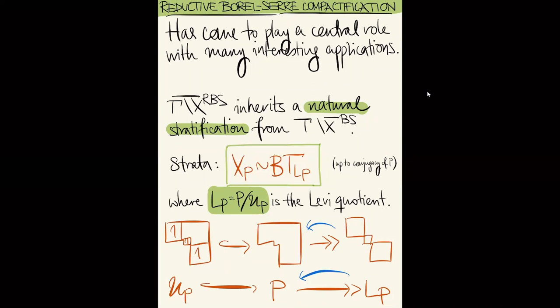I want to study these spaces using stratified homotopy theory, taking into account this extra structure of a stratification. Let me stress that this stratification is not a choice of extra data — it's really built into the construction; they are constructed as stratified spaces. I'll now tell you about stratified homotopy theory and the tools I use to study these spaces, then start tying all these loose ends together — I've introduced unstable algebraic K-theory, we've introduced a model for it, I've introduced the reductive Borel-Serre compactification, and now I'll tell you the tools with which I'm studying it.